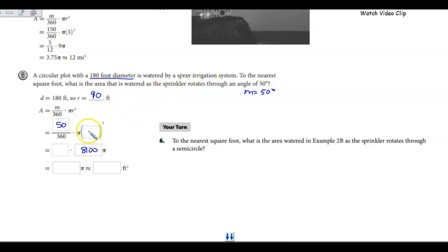I'm going to multiply 5 over 36 times 8,100 times pi. And that's going to give me 1,125 pi. So there's my terms of pi.